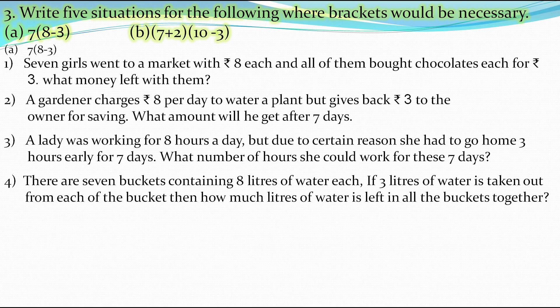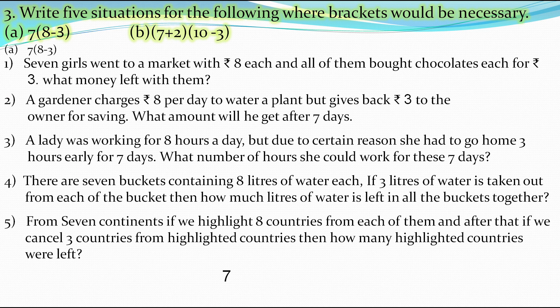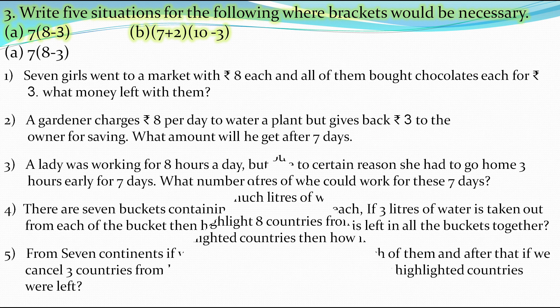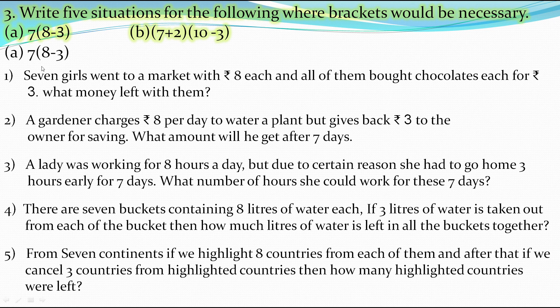The fifth situation: from 7 continents, if we highlight 8 countries from each and then cancel 3 countries from the highlighted ones, we subtract 3 from 8. How many highlighted countries are left? As there are 7 continents, we multiply (8−3) with 7 and enclose it in the bracket. These are the 5 situations which match the expression 7×(8−3).